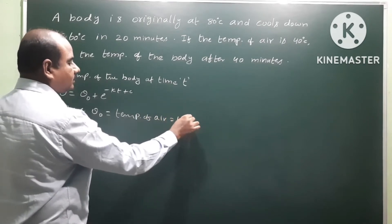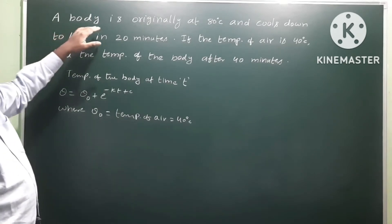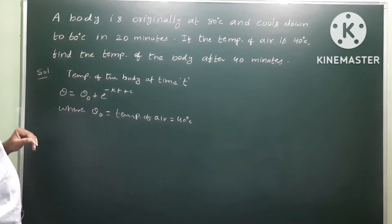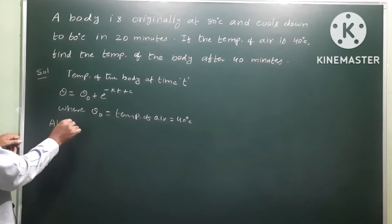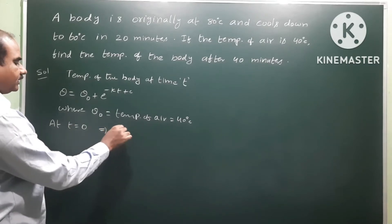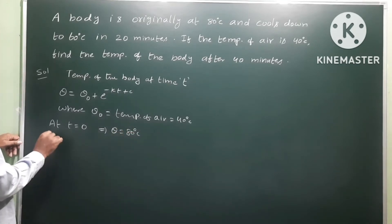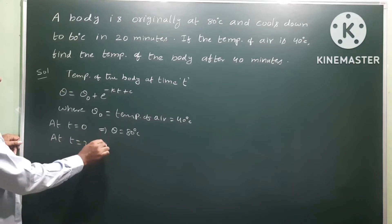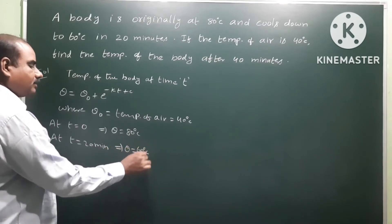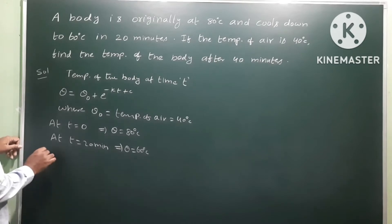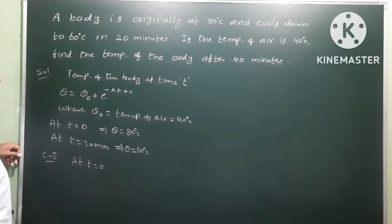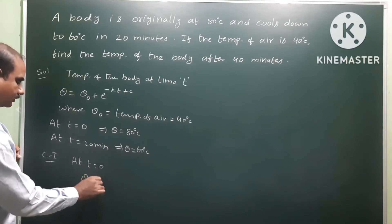The surrounding air temperature theta naught is 40 degrees centigrade. The body starts at 80 degrees centigrade. After 20 minutes, the temperature is 60 degrees centigrade.